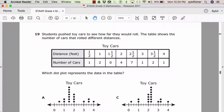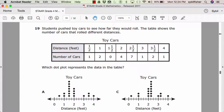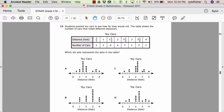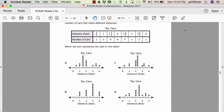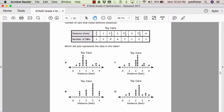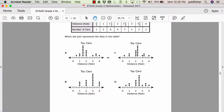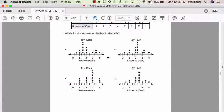Number nineteen. Students pushed toy cars to see how far they would roll. The table shows the number of cars that rolled different distances. Which dot plot represents the data in the table? Toy cars, number of cars. One, two, one and a half feet, zero, etc. Which dot plot represents the data in the table?